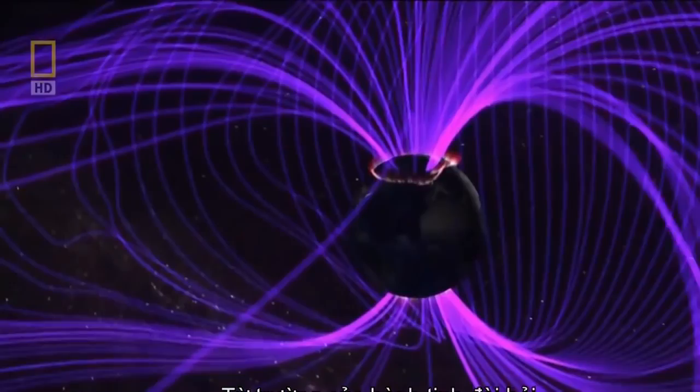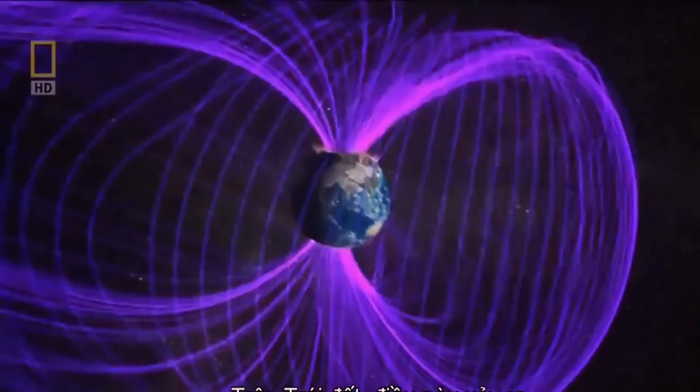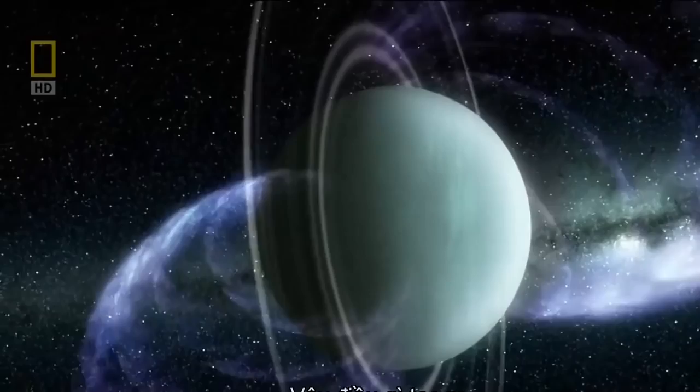Planetary magnetic fields require the movement of charged particles. On Earth, this occurs in our molten iron core. So what's driving Uranus's magnetic field? There's more going on here than meets the eye. Time to start exploring.